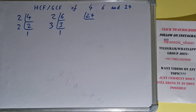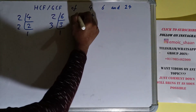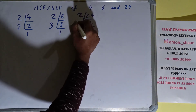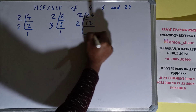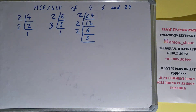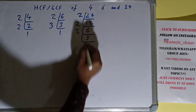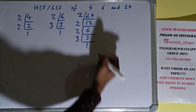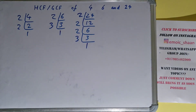Now we need to do the same with the number 24. Is the number 24 divisible by 2? Yes it is, and we'll get 12. Is this 12 divisible by 2? Yes it is, we'll get 6. 6 is again divisible by 2, we'll get 3. Is this 3 divisible by 2? The answer is no, because 3 is a prime number, so it is only divisible by itself, and we'll get 1.